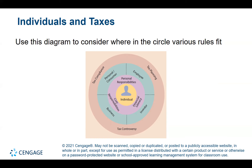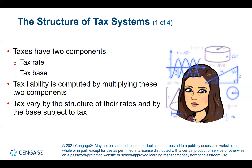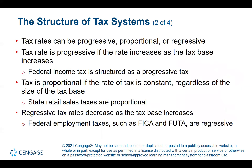The structure of the tax system has two components: the rate and the base. The rate is usually the percentage applied to the base, and the base can be anything from income to sell price. The tax liability is computed by multiplying the tax rate by the tax base. Taxes vary by the structure of the rates and their base subject to tax. There are three types: progressive, proportional, and regressive.